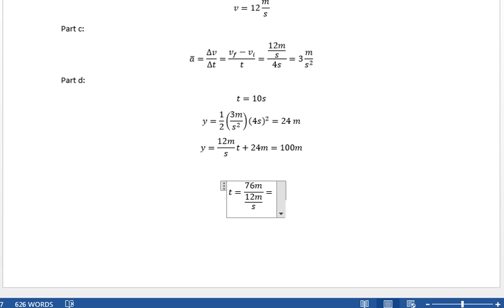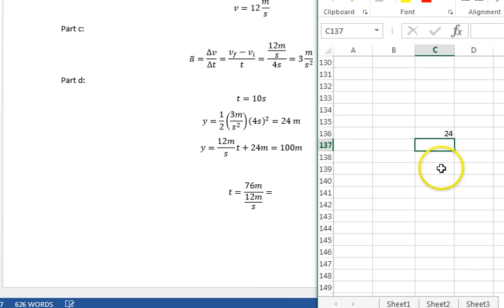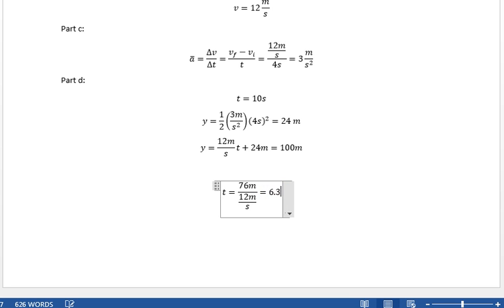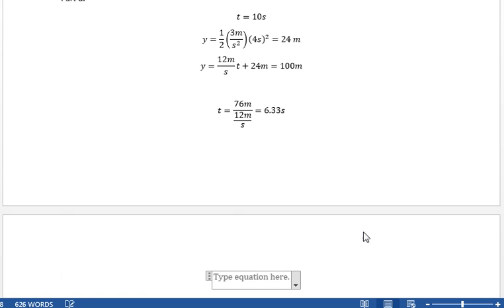Okay. 76 divided by 12 is 6.33 seconds. So, total time that he actually needed to complete the race was time equals 10.33 seconds. That's how much time it took to actually complete the race. And that's it for this problem.